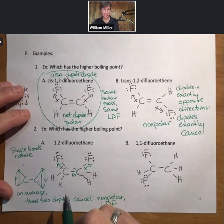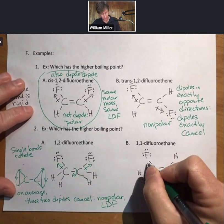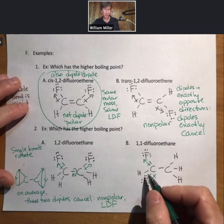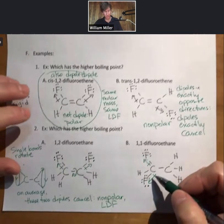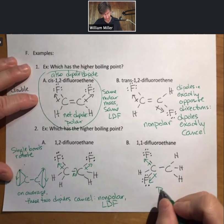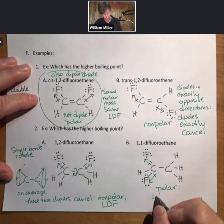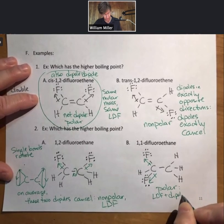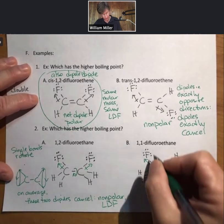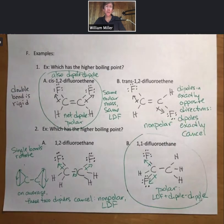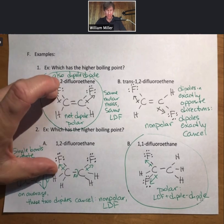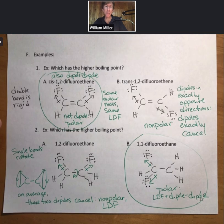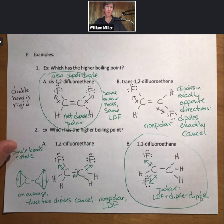Here we have two dipoles. These two dipoles create a larger sweep because there are two of them. They do not cancel out. Polar, so LDF plus dipole-dipole. So we learned a couple very interesting things. First off, double bonds are rigid, single bonds rotate, and then we have to look at the fluorines all around them. Symmetry really does matter for these. Being able to look at the dipole and see how it cancels really important for these two examples.